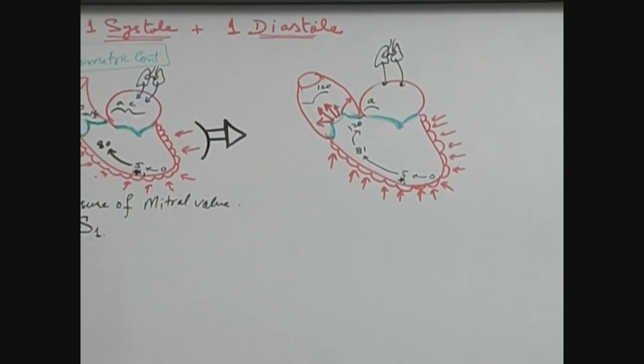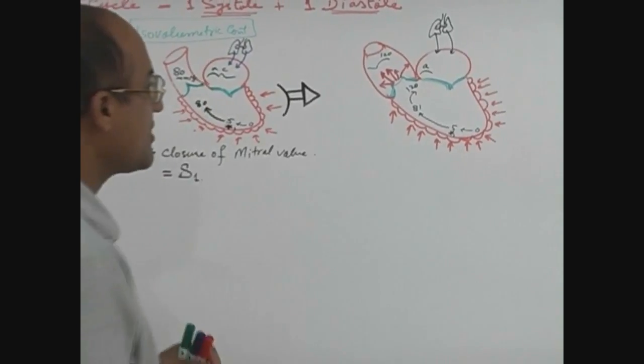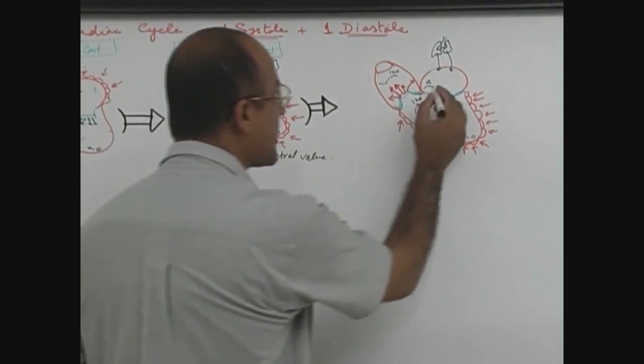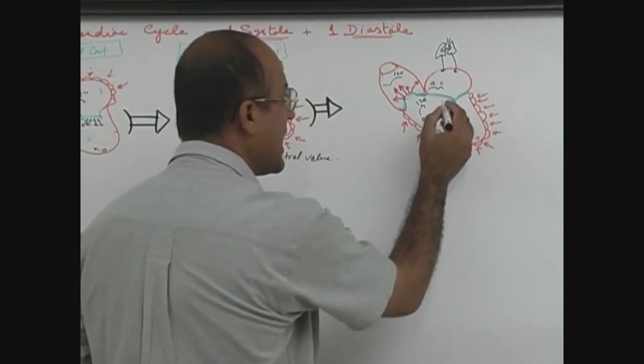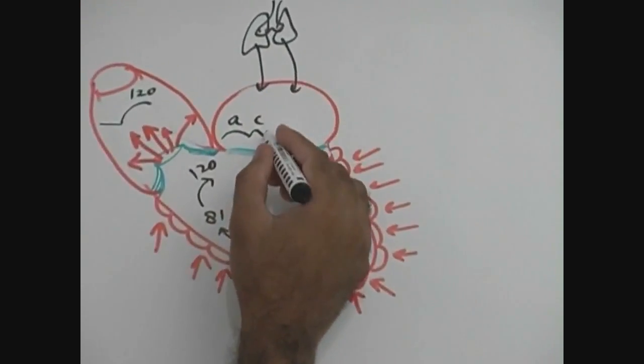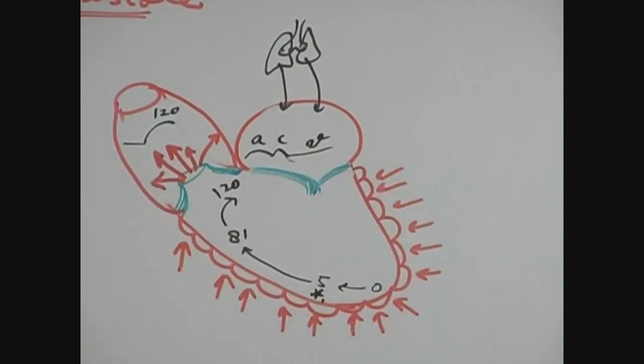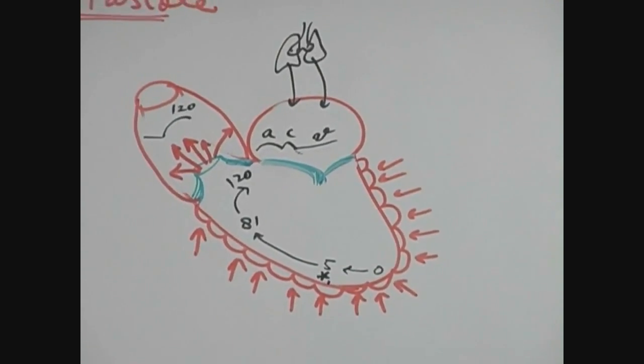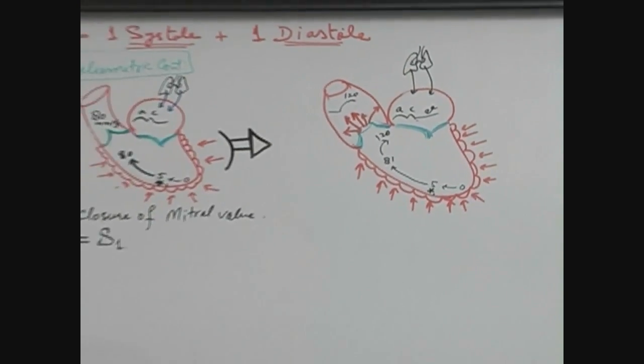Due to that reason, in the beginning there was a wave which was due to atrial contraction. In the next phase when isovolumetric contraction started, there was C wave. And then this wave of accumulation of venous blood is called V wave, so this V wave is continuing.